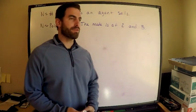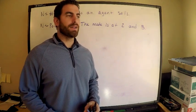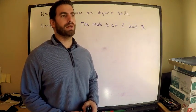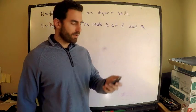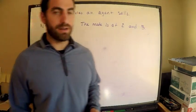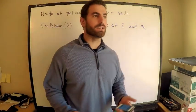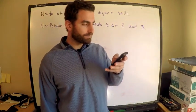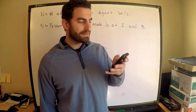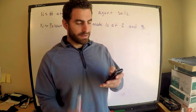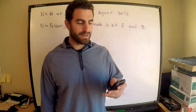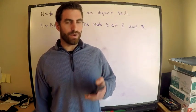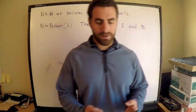The mode is at 2 and at 3. In other words, the probability is maximized when N is 2 and when N is 3. I'm going to write down an equality that will let me answer this. K is the smallest such number that the probability of selling more than K policies is less than 25%. I want to find K.